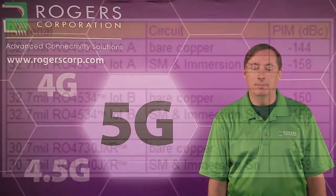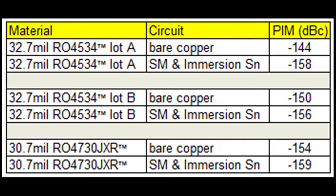This table compares two different materials — one with two different lots (Lot A and Lot B) — using our standard test vehicle labeled as bare copper. The PIM performance for bare copper is not as good as the other configurations labeled SM and Immersion Tin, which is solder mask over bare copper with Immersion Tin in areas where the cable was soldered to the circuit. In every case, PIM was improved with solder mask and Immersion Tin over the bare copper test vehicle. We've heard this in the industry and now confirmed it — solder mask does improve PIM performance, and Immersion Tin by itself can also improve PIM versus bare copper.